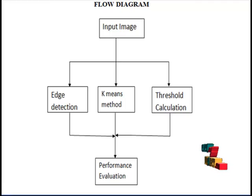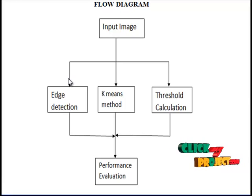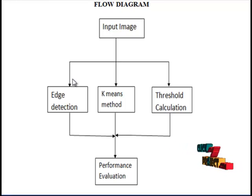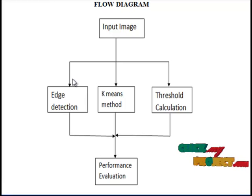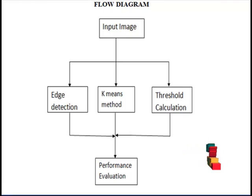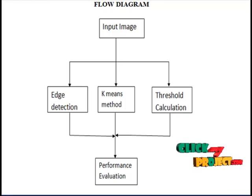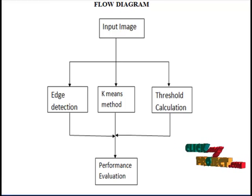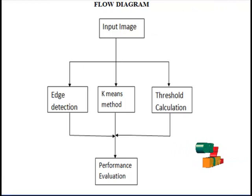The final process of our segmentation workflow is performance evaluation. This evaluation method measures the performance of the segmented image using three concurrent segmentation methods: edge detection, k-means method, and threshold calculation. Using PSNR calculation, we evaluate the performance of the segmented image. This is very useful to note how these segmentation methods work and what performance ranges occur for each method.